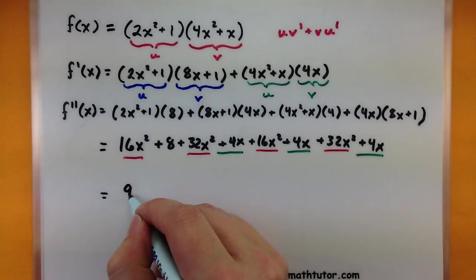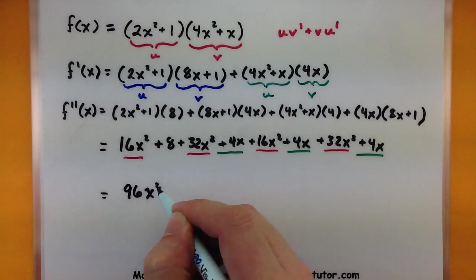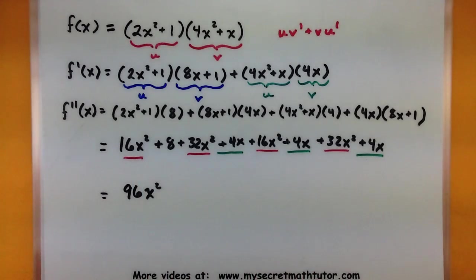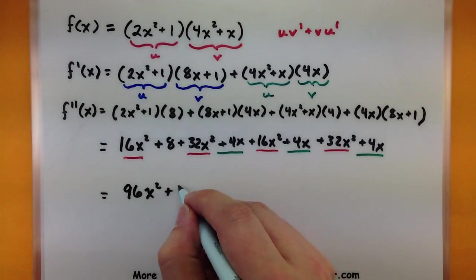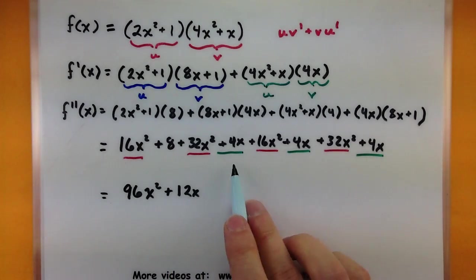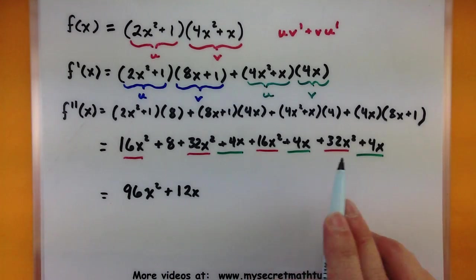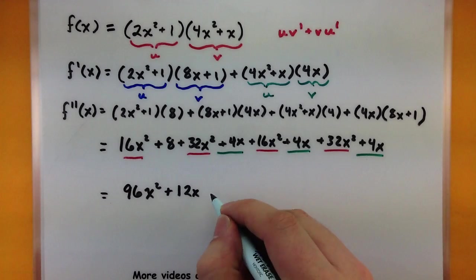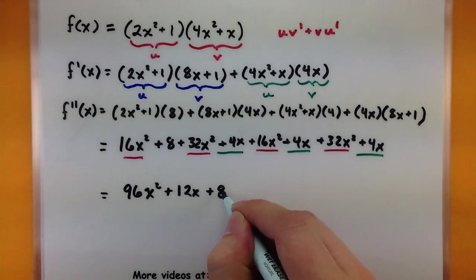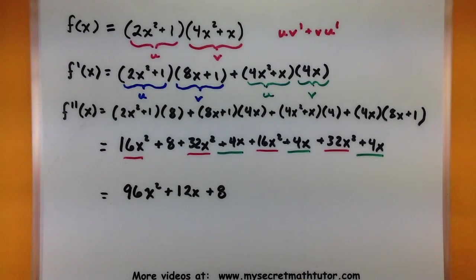So I get a 96x squared from combining all of my x squared terms plus a 12x that comes from both of these x's. And then there's my 8 all by itself. So there's two derivatives of our original function.